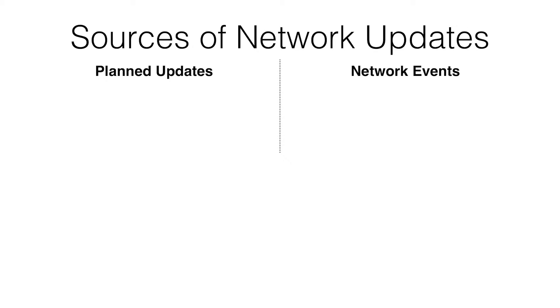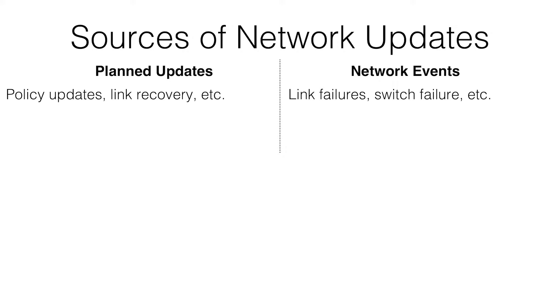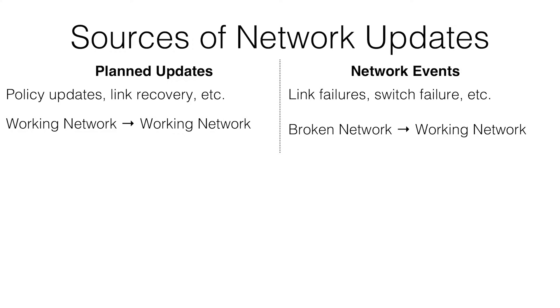There are several sources of network updates, and two that really matter now that we've gone to proactive networks: planned updates and network events. Planned updates — which a lot of work in this field, especially consistency for SDN, has focused on — are cases like policy updates, link recovery, or addition of hardware. Network events are cases like link failures or switch failures. The key difference is that with planned updates, you have a working network and want to go to another working network. With network events, your network is broken and you want to fix it.